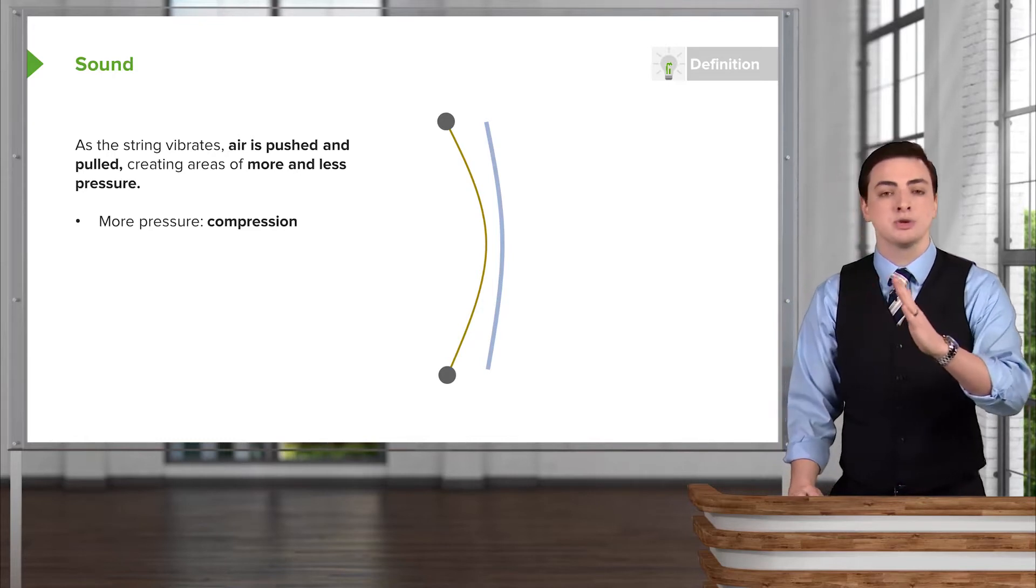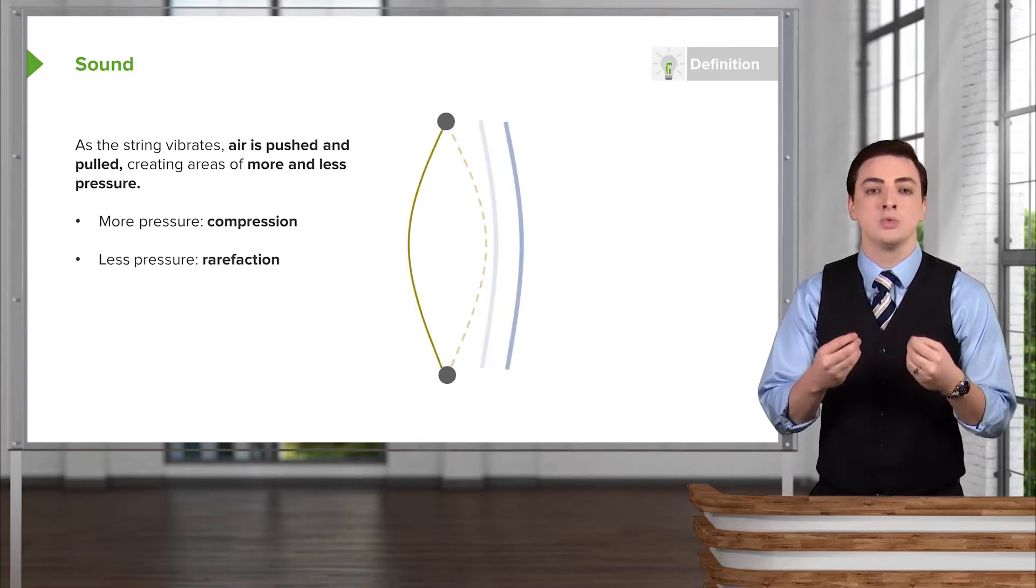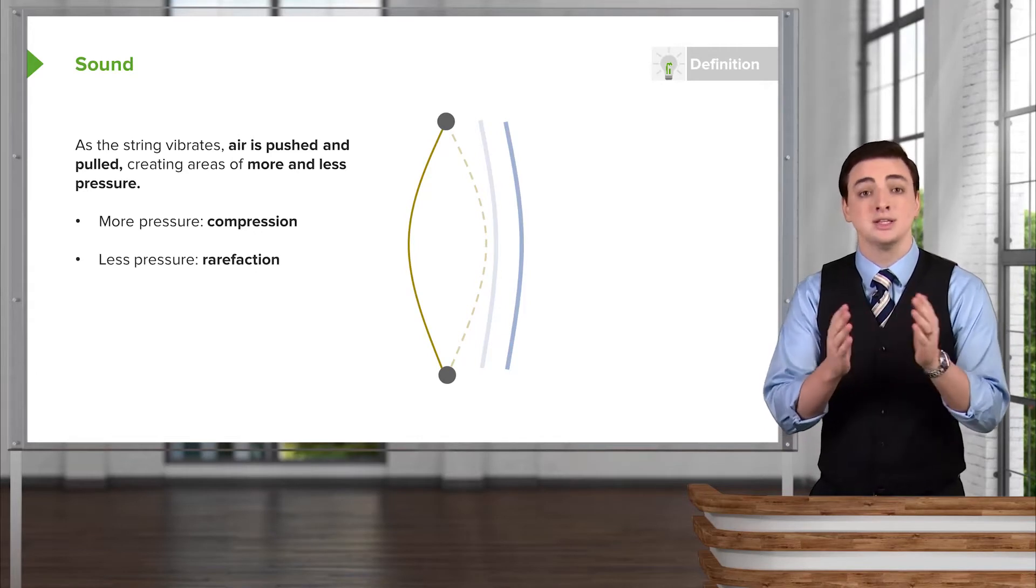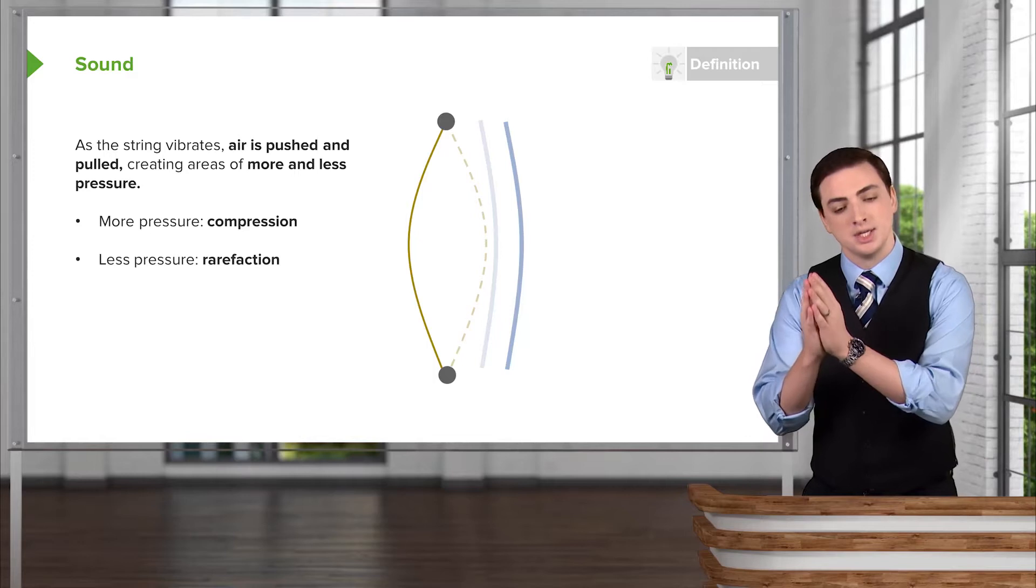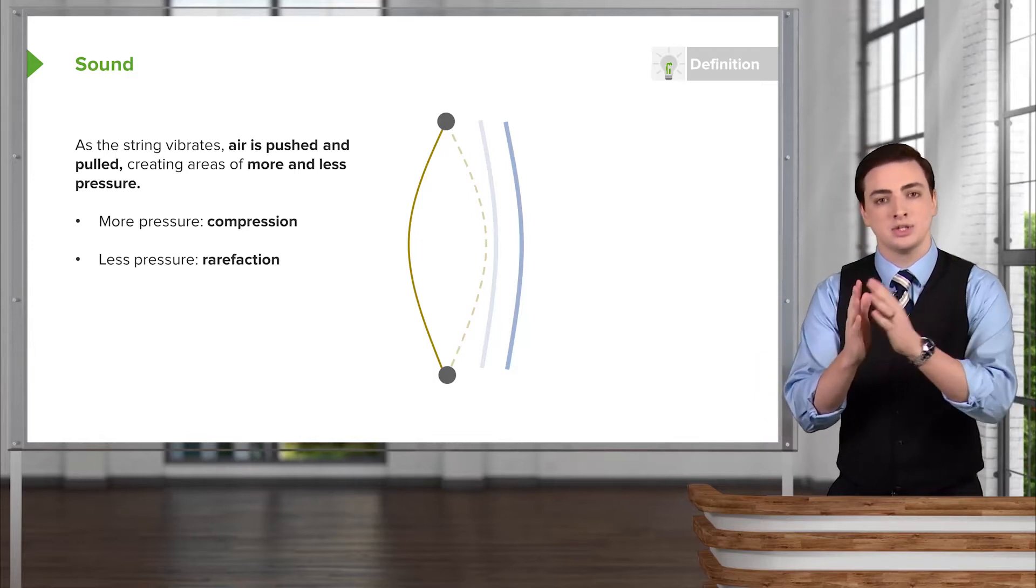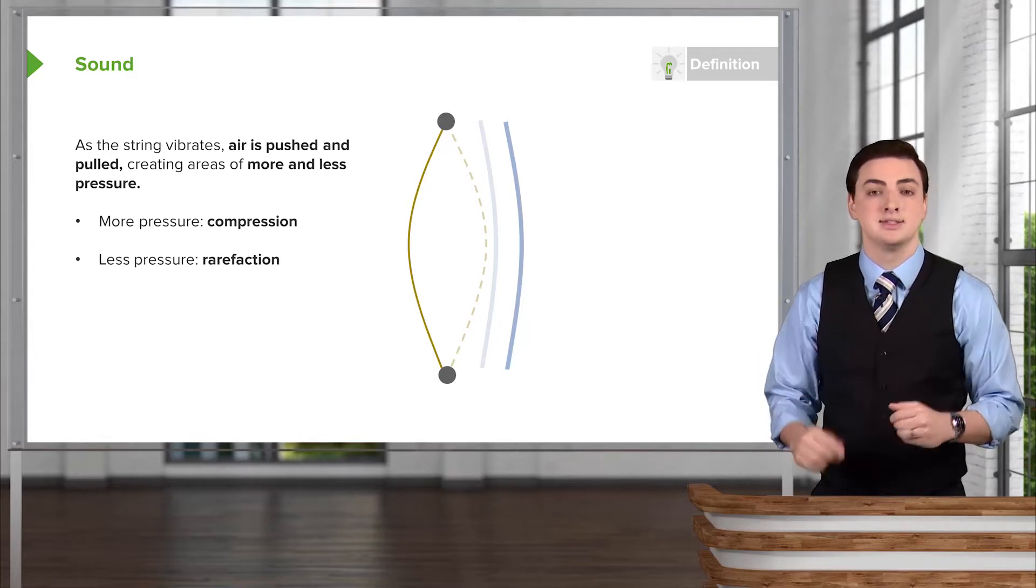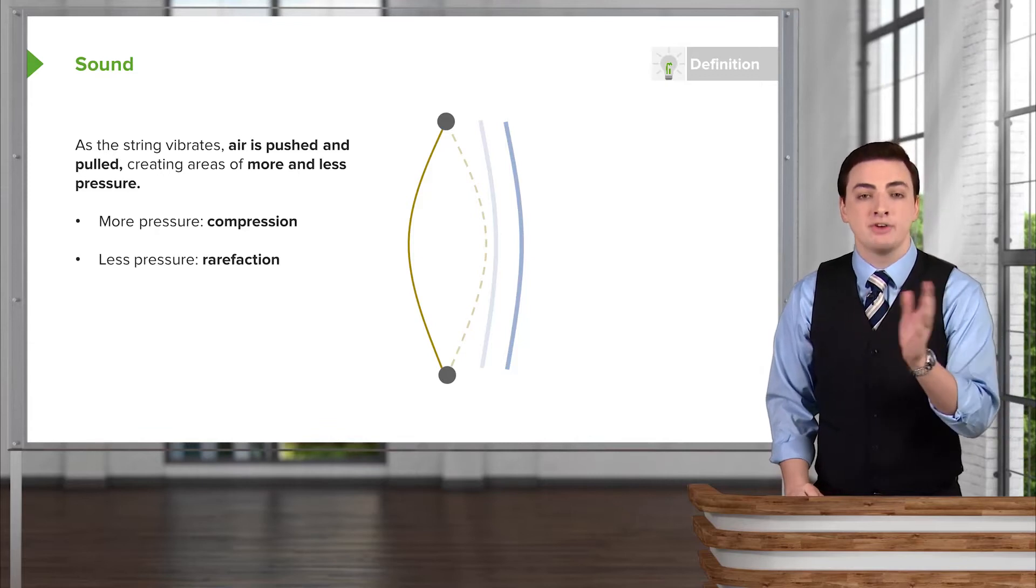And then as the string moves back away from the air, we have what's called a rarefaction, making the air less dense. A compression makes the air more dense as it pushes the air, and when the string moves back we have a rarefaction which means less dense air.